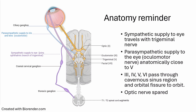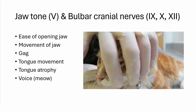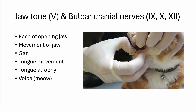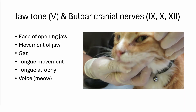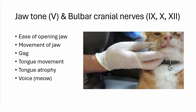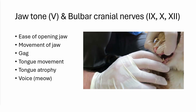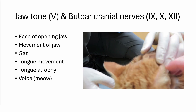Next we move to jaw tone and the bulbar cranial nerves, assessed by opening the jaw. We assess jaw tone when opening, jaw movement, the gag response, tongue movement, and look at the tongue for atrophy. We also ask the owner about the animal's voice. Here we're opening the mouth and the jaw has quite good tone. We can see the animal close the jaw, and we have a normal gag and tongue movement.